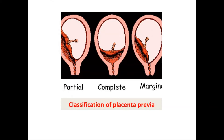Placenta previa is classified according to its proximity to the internal cervical os. Marginal placenta previa is where the placenta only touches the internal cervical os without covering it. Partial placenta previa only partially covers the internal cervical os. Complete placenta previa completely covers the internal cervical os from both sides. These are the three degrees: marginal, partial, and complete placenta previa.